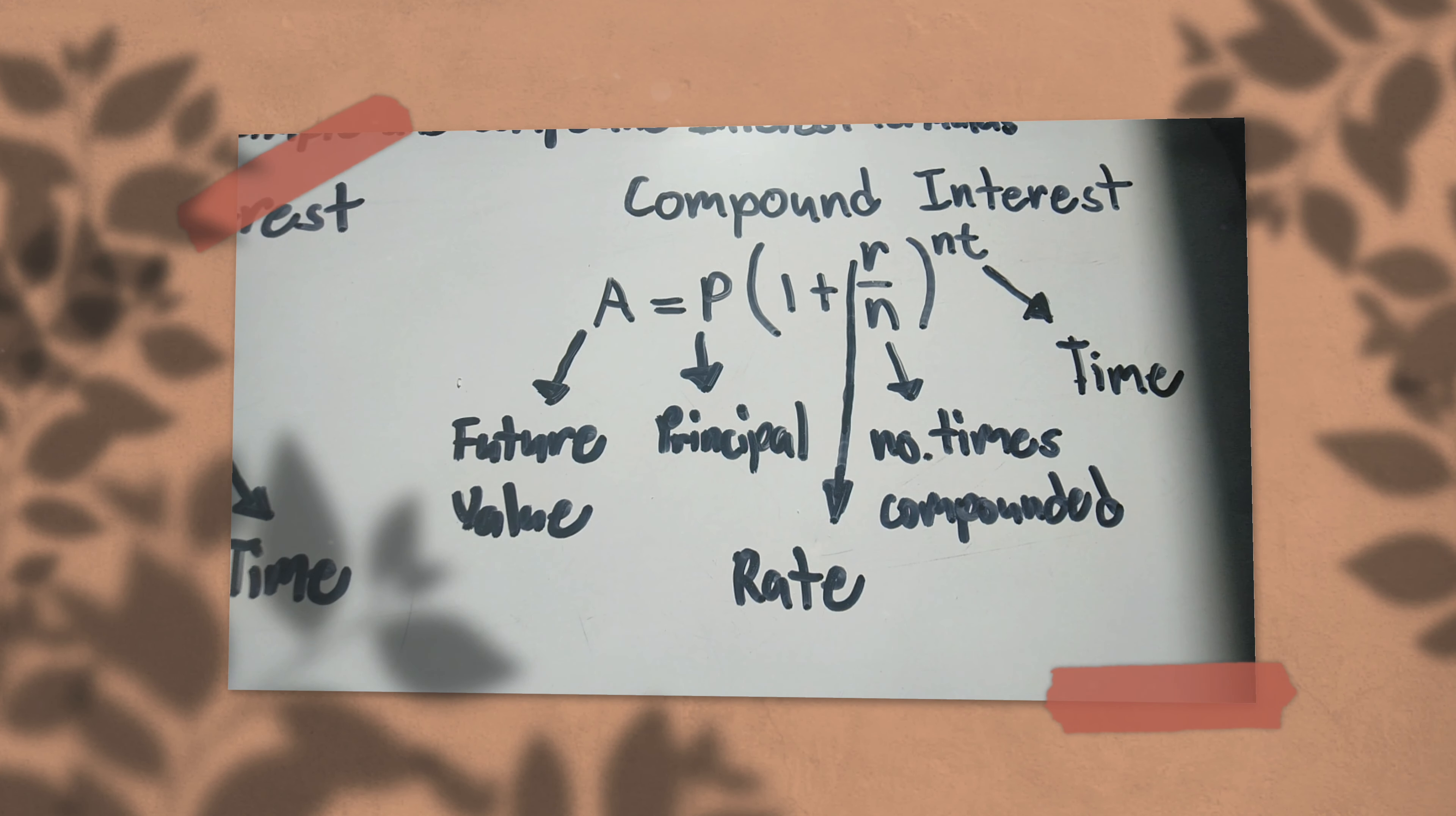Then when you solve all of this and get the value that comes out when you solve this on your calculator, that's your future amount. That's how to get compound interest. And later, I'll teach you how to solve using compound and simple interest with word problems.